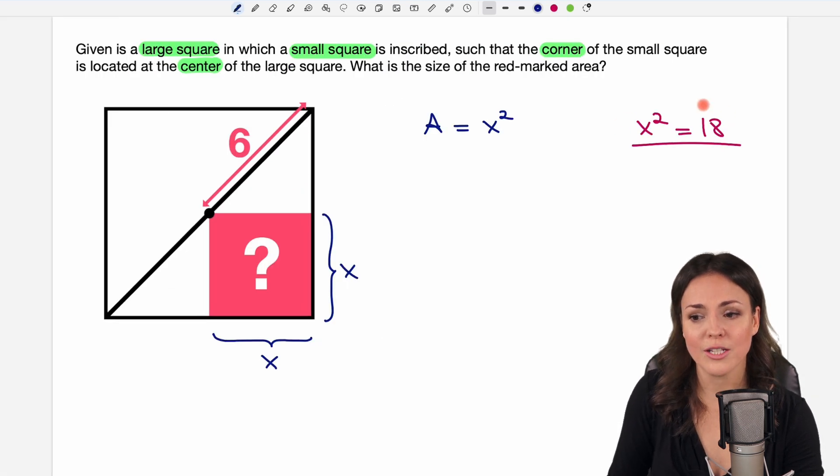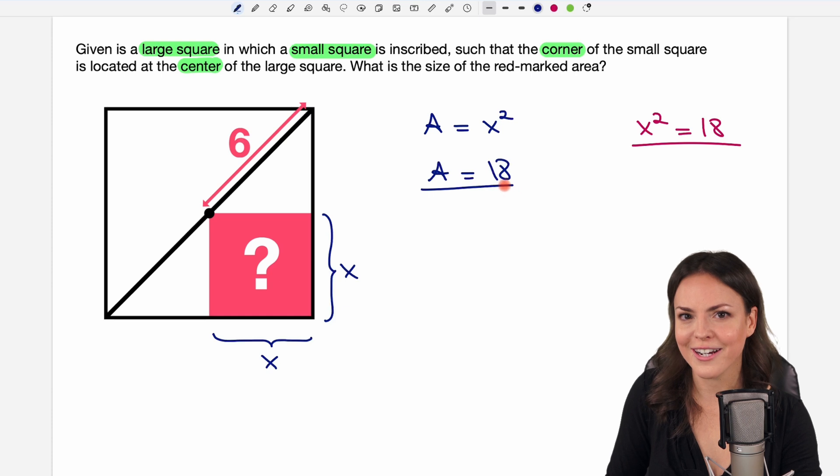We just found out x squared is 18 and we need x squared for our area so we stop here because we've already found what we need x squared equals 18 and that is the size of our area.